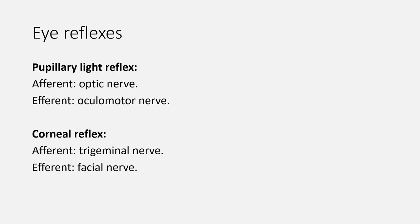Now let's move to the eye reflexes. We have two important reflexes: pupillary light reflex and corneal reflex. The pupillary light reflex is an autonomic reflex that constricts the pupils of both eyes in response to light stimulation of one eye, thereby adjusting the amount of light that reaches the retina. The afferent nerve is the optic nerve and the efferent nerve is the oculomotor nerve. The corneal reflex causes both eyes to blink in response to tactile stimulation of the cornea. The afferent nerve is the trigeminal nerve and the efferent nerve is the facial nerve. Testing of both reflexes is useful to identify lesions anywhere along their pathways.